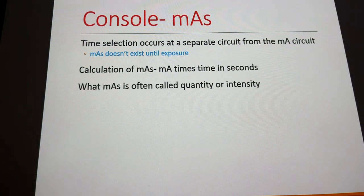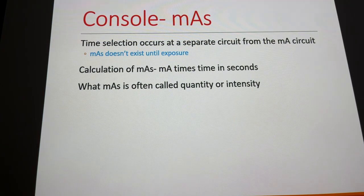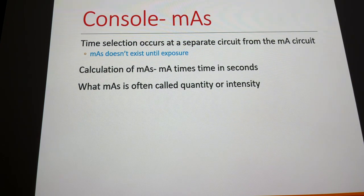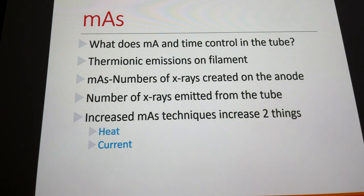As you increase MA, you're sending more electrons through the filament — you don't have tube current yet, just filament current. MA stands for milliamperage, and amperage is just a count of electrons. Increase your MA and you're increasing the count of electrons going through the filament, essentially making the filament hotter — like turning up the temperature on a toaster or oven.